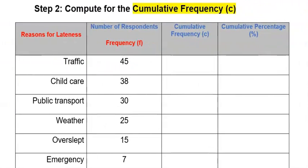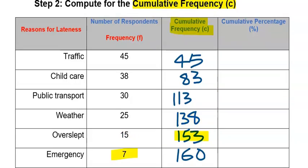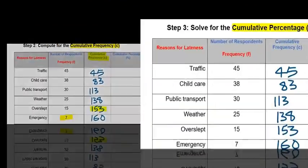Step number 2: Compute for the cumulative frequency. We start with 45. Next, 45 plus 38, you got 83. Next, 83 plus 30, and you got 113. Next, 113 plus 25, 138. Next, 138 plus 15, 153. Next, 153 plus 7, and you got 160.